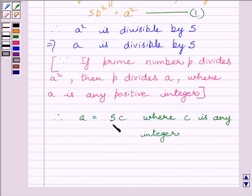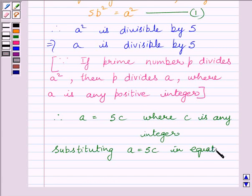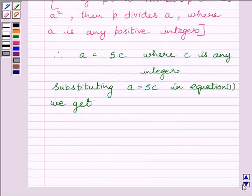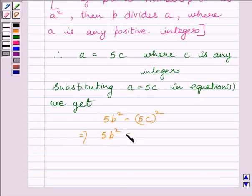5B square is equal to 5C whole square. This implies 5B square is equal to 25C square. This further implies B square is equal to 5C square.